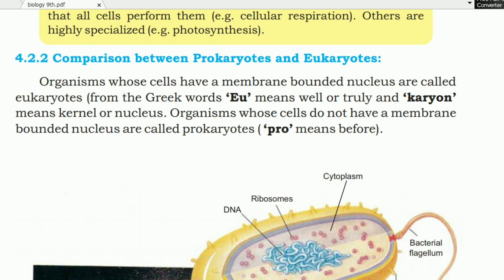Organisms whose cells have a membrane-bounded nucleus are called eukaryotes. That means organisms whose nucleus is bounded by a membrane are called eukaryotes. From the Greek words, 'eu' means well or truly, and 'karyon' means kernel or nucleus.